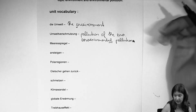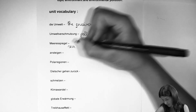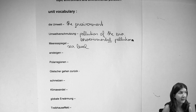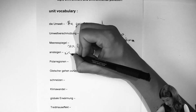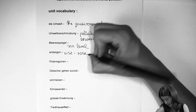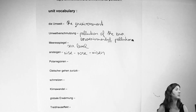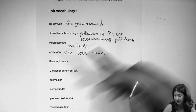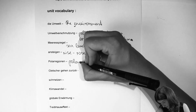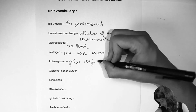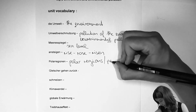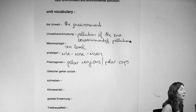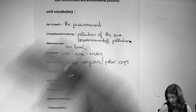Next: 'Meeresspiegel' — pretty easy one: sea level. Sea levels are rising because of the glaciers melting. Make sure you've learned your irregulars: rise, rose, risen. The polar regions — sometimes we also talk about the polar caps — are melting, therefore sea levels are rising.